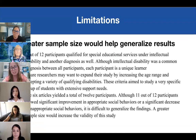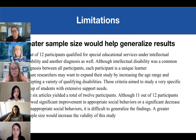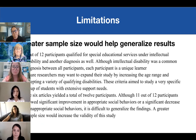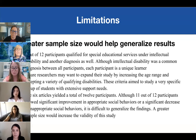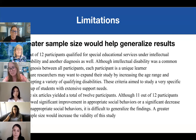Five out of 12 participants qualified for special educational services under intellectual disability but also had a secondary disability, making it difficult to isolate intellectual disability, although it was a common diagnosis through all participants. Future researchers may want to expand their study by increasing the age range and accepting a variety of qualifying disabilities. These criteria aim to study a very specific group of students with extensive support needs. Although 11 out of 12 participants showed significant improvement, it is difficult to generalize these findings, and a greater sample size would increase validity.